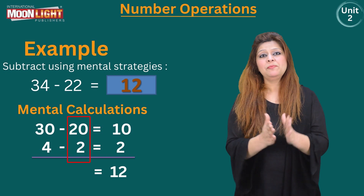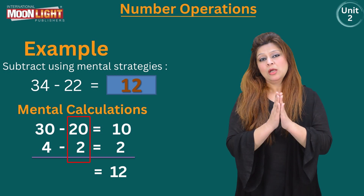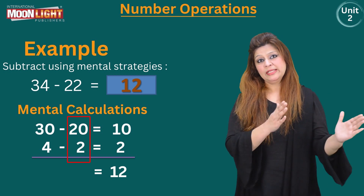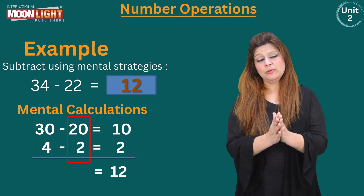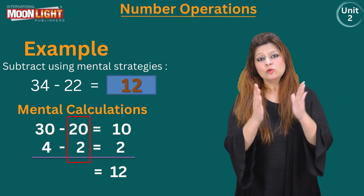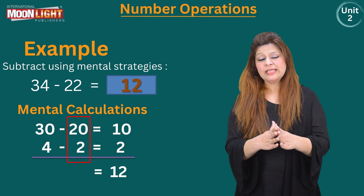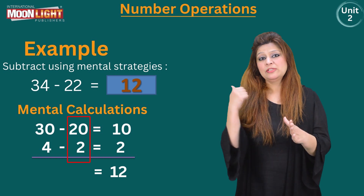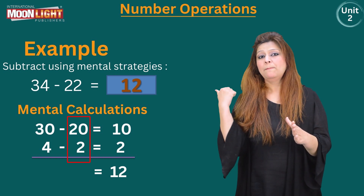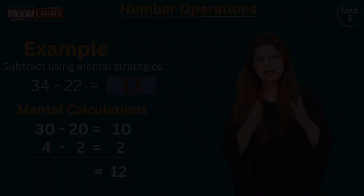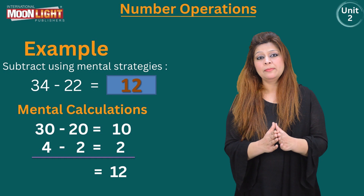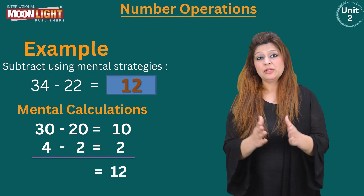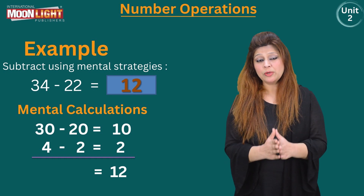I will break 22 down into tens and ones as well. So 22 becomes 20 plus 2. I have circled the numbers so that the picture is clear to you.